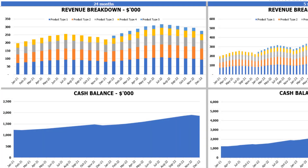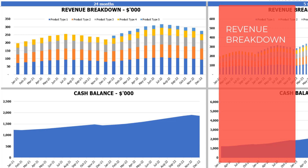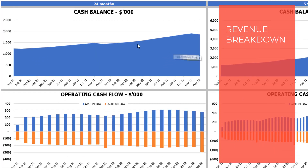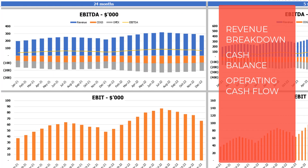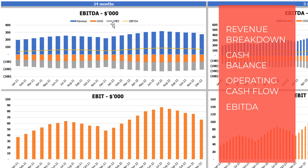On the financial charts tab you may see the main financial outputs in graphical form. On the left side you see charts for 24 months and on the right side for 5 years or 60 months. The top charts show revenue breakdown by product types. Next are cash balance charts for 2 and 5 years, followed by operating cash flow broken down by cash inflow and outflow. Then EBITDA breakdown showing revenue, COGS, and OpEx with a yellow line for the resulting EBITDA value, and finally EBIT value by months.